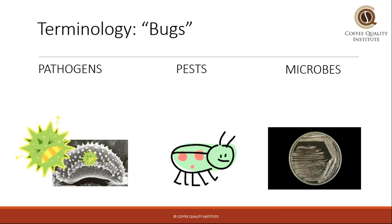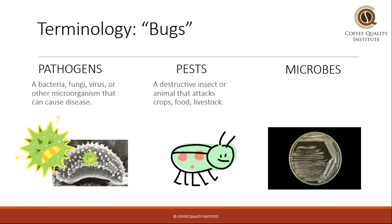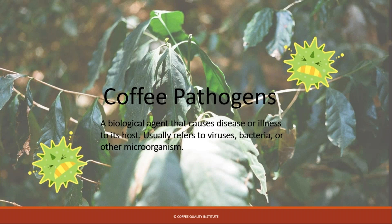What do I mean by bugs? Pathogens — bacteria, fungi, viruses, or other microbes that can cause disease. Pests are usually destructive insects that you can see relatively easily, and microbes include bacteria, fungi, and others. Today we're going to talk about coffee pathogens, which are generally considered to be agents that cause disease or illness to a host.